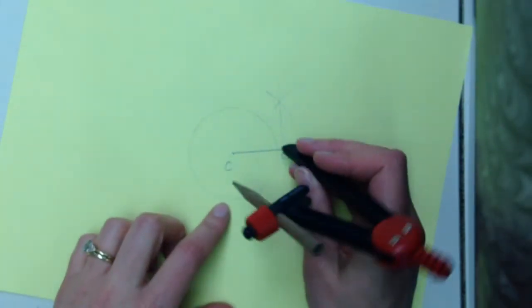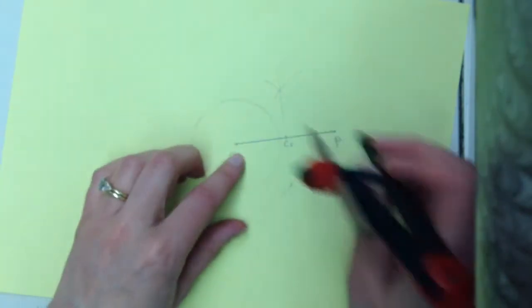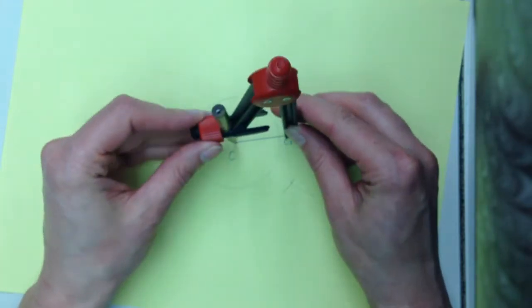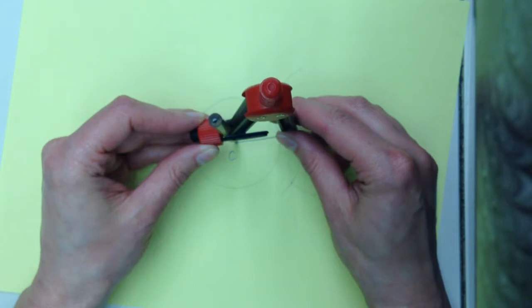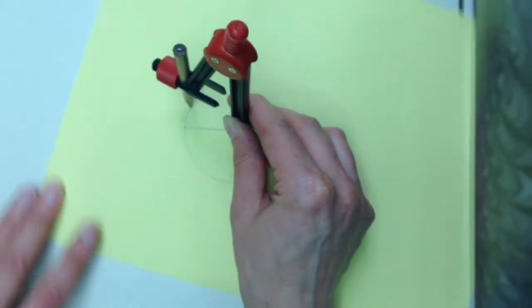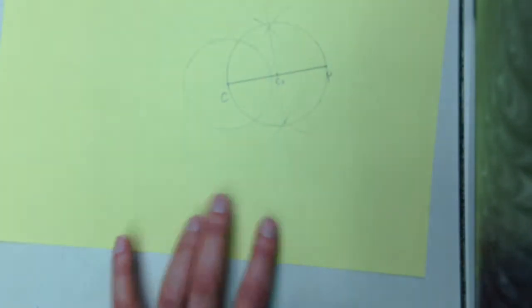So now that's center, so I'm going to put my pointer on that. So C and P are the endpoints of the diameter. So now when I put my compass on the center and one of the endpoints, I should be able to construct a circle that goes through C and point P. And there we go.